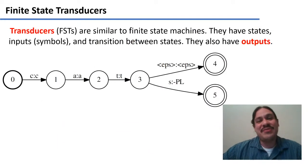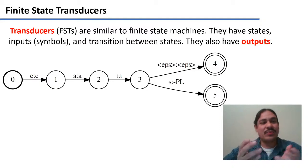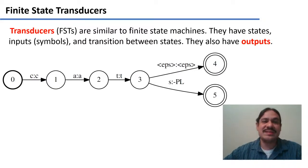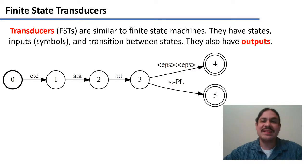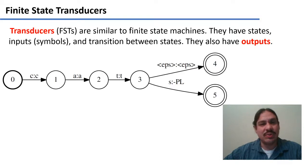Transducers are very similar to finite state machines — they have states. For example, this transducer here has the initial state 0, the end states 4 and 5, and the intermediate states 1, 2, and 3.